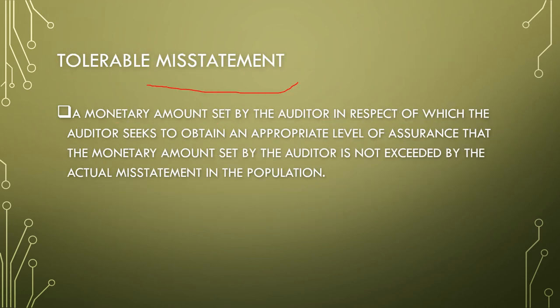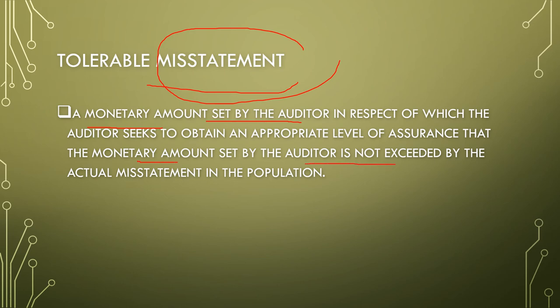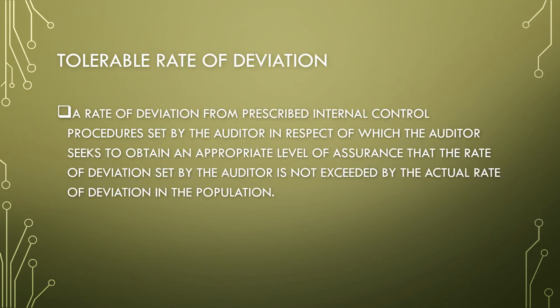Tolerable misstatement is a monetary amount set by the auditor in respect of which the auditor seeks to obtain an appropriate level of assurance that the monetary amount set by the auditor is not exceeded by the actual misstatement in the population. Tolerable rate of deviation is a rate of deviation from prescribed internal control procedures set by the auditor, in respect of which the auditor seeks to obtain an appropriate level of assurance that the rate of deviation is not exceeded by the actual rate of deviation in the population.